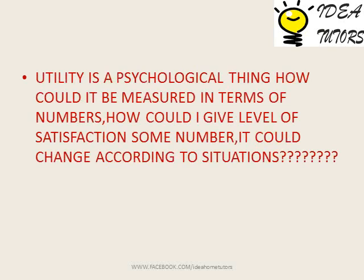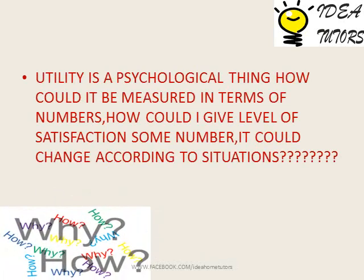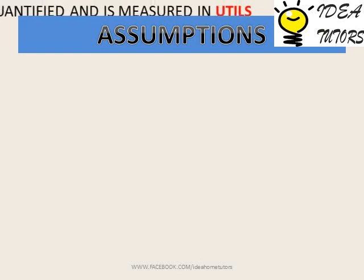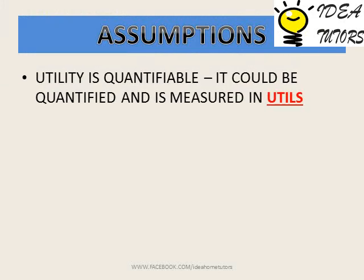A question that arises is that utility is a psychological thing — the amount of satisfaction depends on your way of thinking. So how could someone measure it in numbers, and if it is measurable, then in what terms? To answer this question, this method is backed by some assumptions.